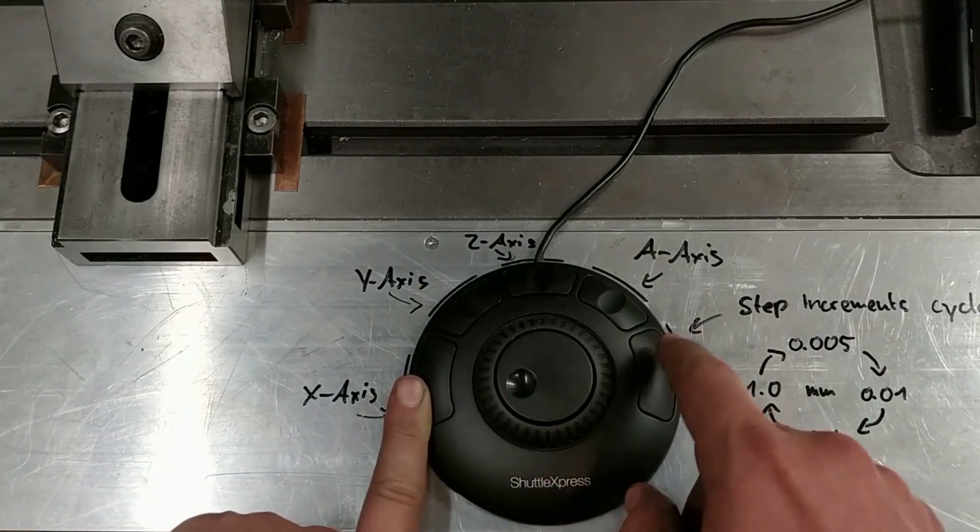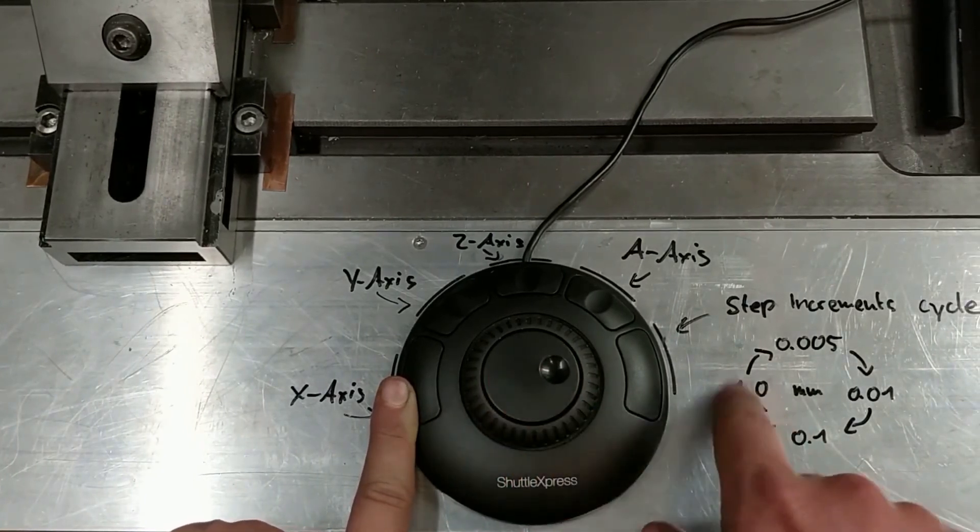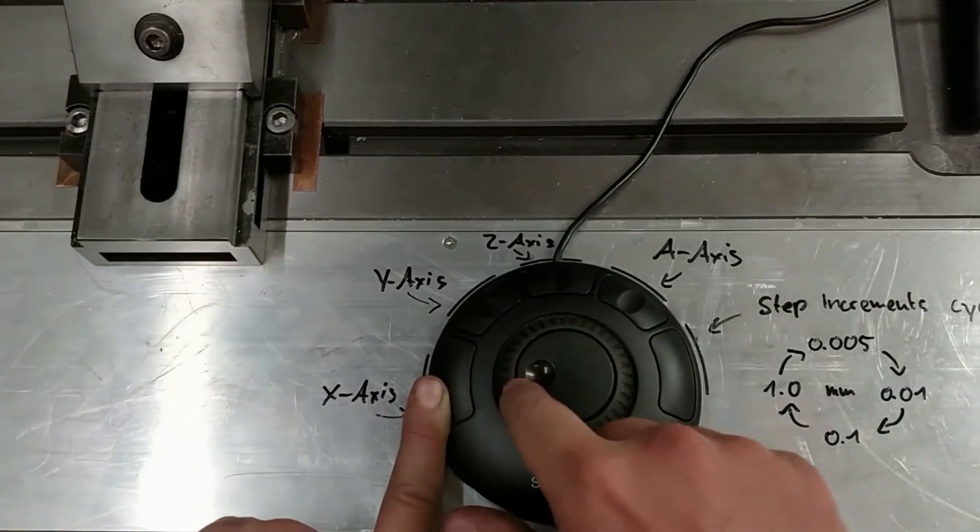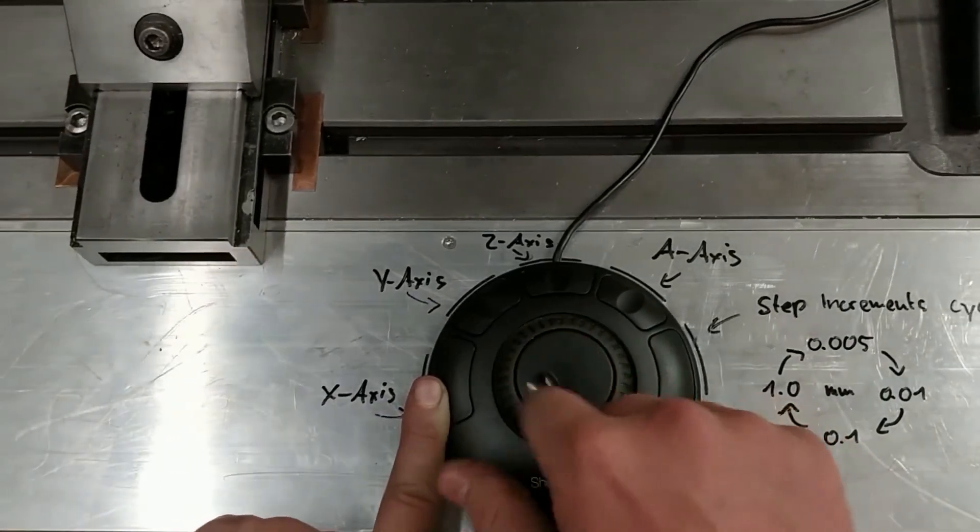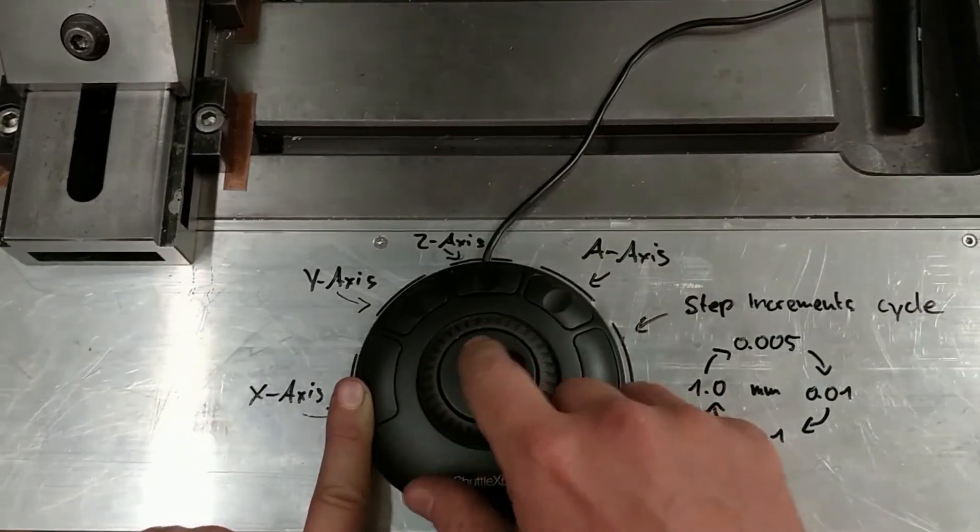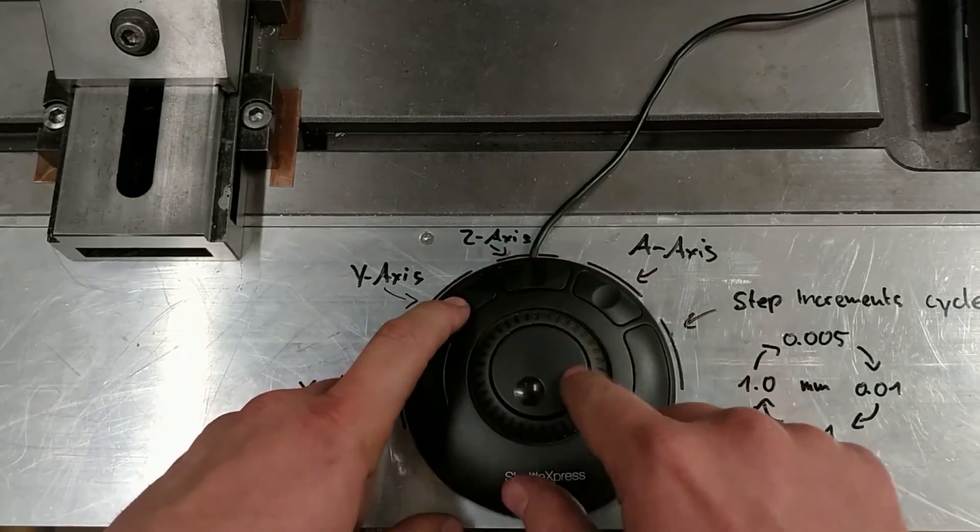And now you should hear it because it moves a bit more for each step. You can cycle through the next. Now that's already 1mm. So in this setting we can jog pretty fast around. And also this works for each axis of course.